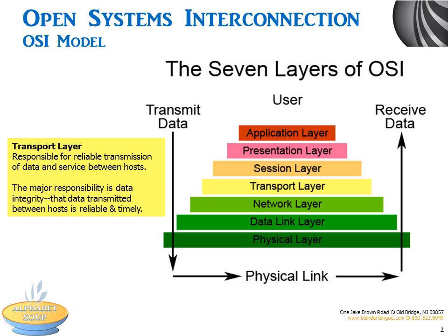The Open Systems Interconnection Model defines inter-networking in terms of a vertical stack of layers. The model can be used as a guide for how data is transmitted over the network. It's an abstract representation of the data pathway, constructed with seven layers: application, presentation, session, transport, network, data, and physical layers. The transport layer is responsible for reliable transmission of data and services between hosts. The major responsibility is data integrity — that data transmitted between hosts is reliable and timely.